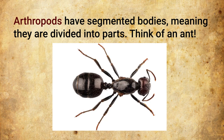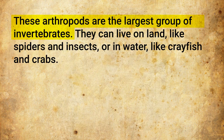Arthropods. Arthropods have segmented bodies, meaning they are divided into parts. Think of an ant — an ant has a segmented body. These arthropods are the largest group of invertebrates. They can live on land, like spiders and insects, or in water, like crayfish and crabs.